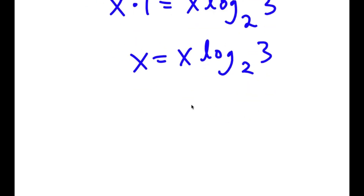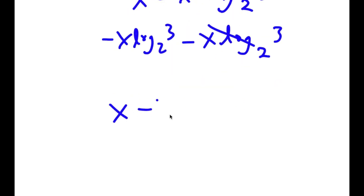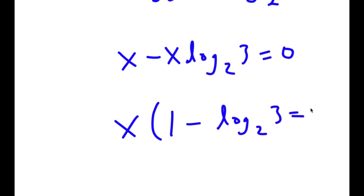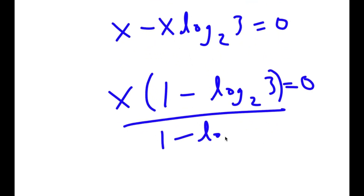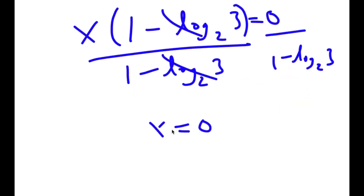Now I'm going to subtract x times log base 2 of 3 from both sides. So I get x minus x times log base 2 of 3 is equal to 0. If I factor out x, I get x times (1 minus log base 2 of 3) is equal to 0. And if I divide both sides by 1 minus log base 2 of 3, I'm left with x is equal to 0.